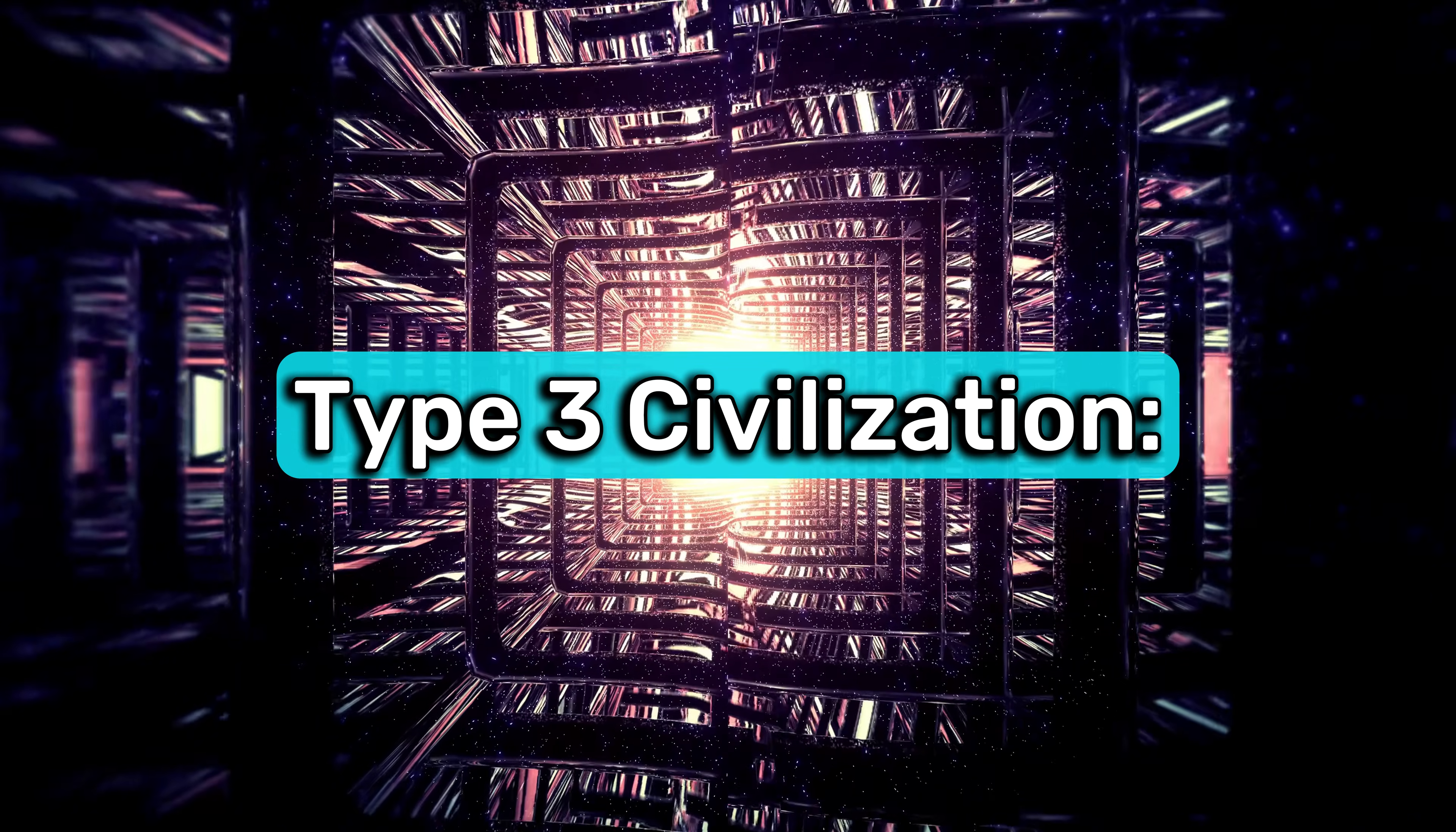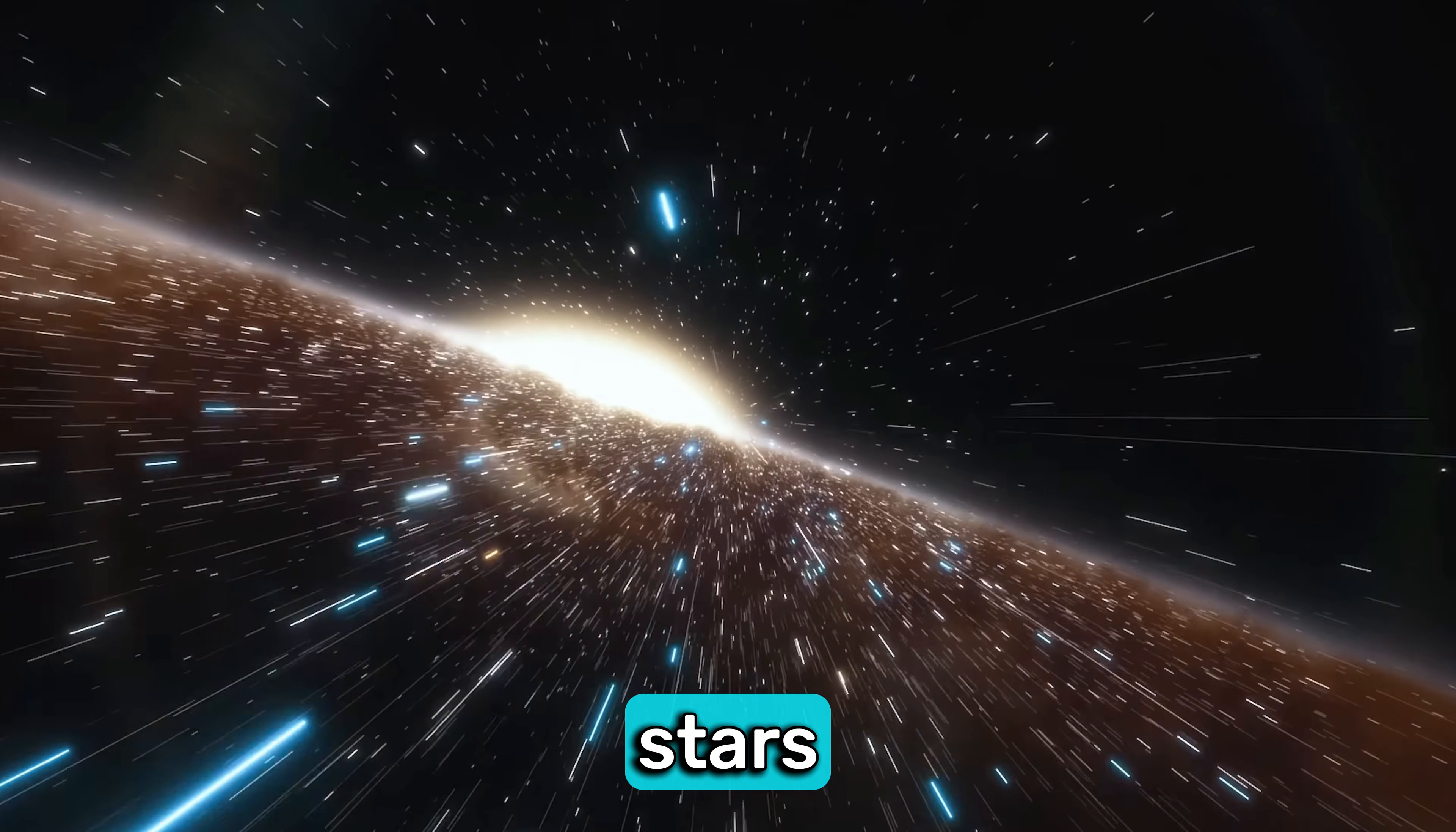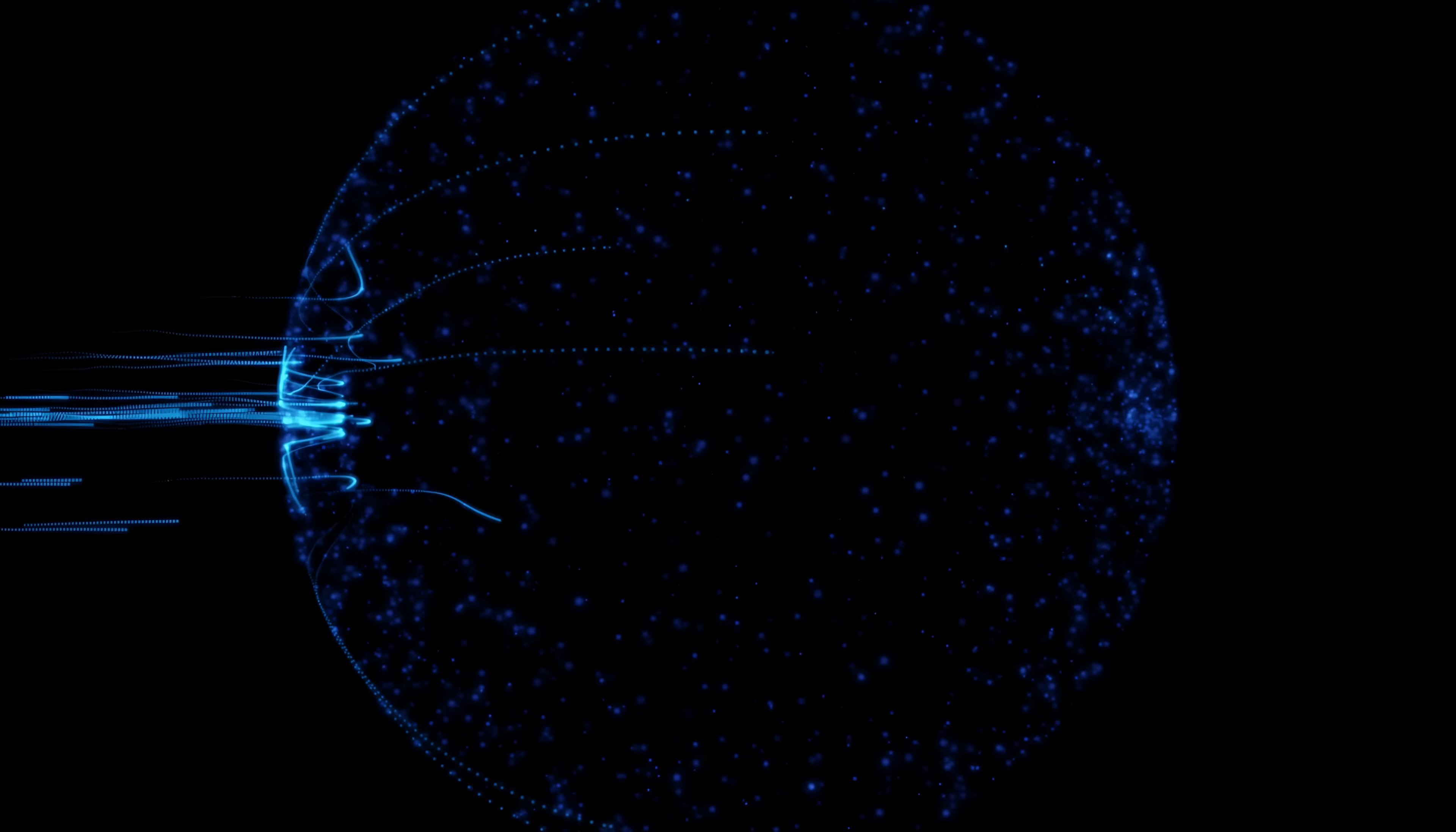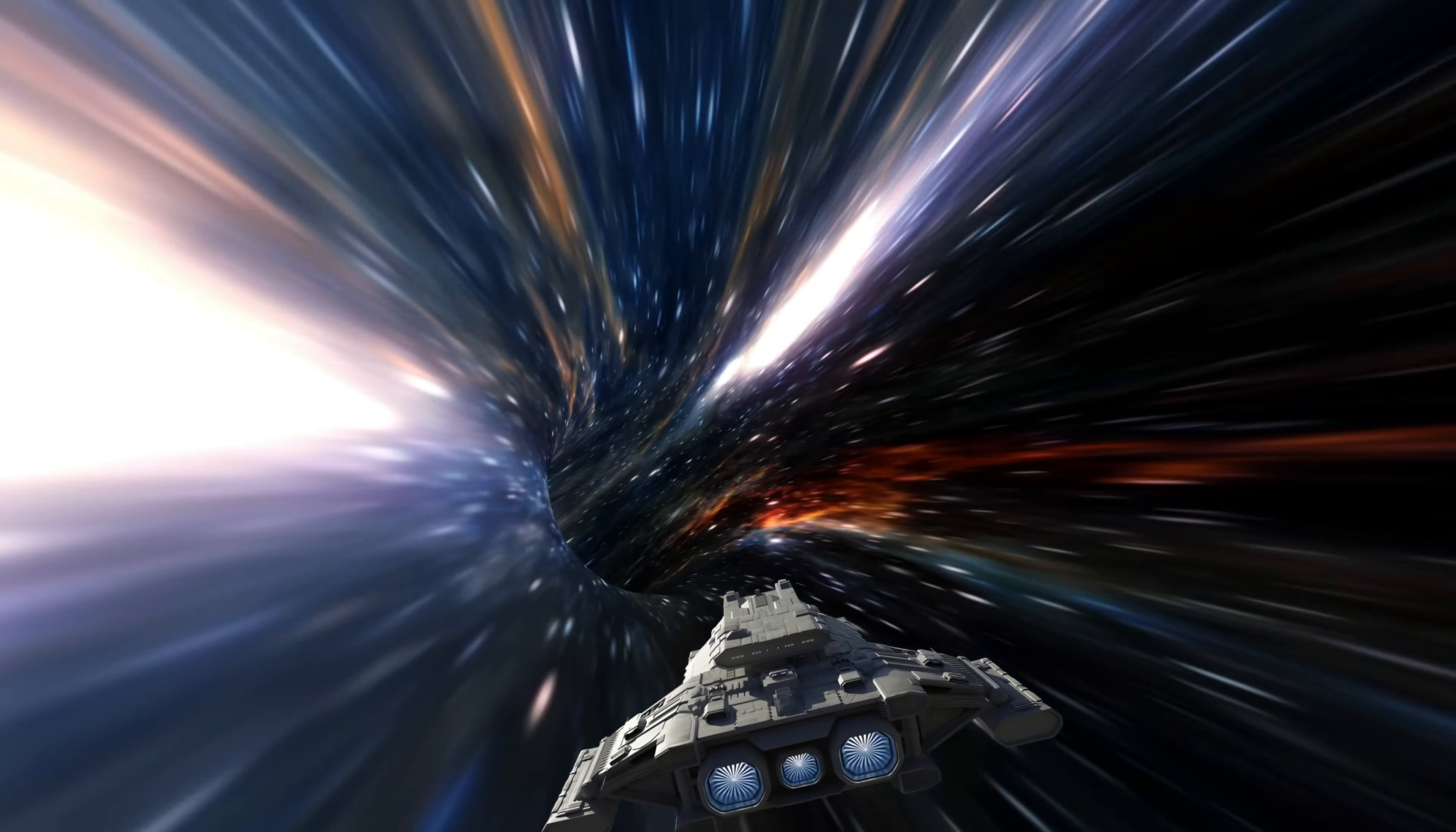Type 3 civilization, the most advanced tier, harnesses energy on a galactic scale, drawing power from billions of stars. Achieving this would require unprecedented technological developments, including advanced space travel and energy management systems. This stage represents a civilization with almost limitless energy resources and capabilities far beyond our current understanding.